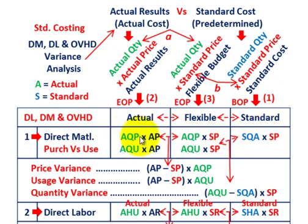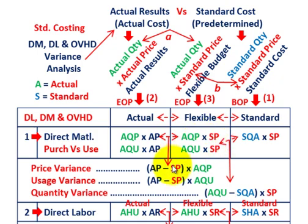For the price variance, the common factor between your actual and flexible amount is the actual quantity purchased. We factor that out, and the price variance is the difference between your actual price versus the standard price, multiplied by the actual quantity purchased. You can see how the table works with the color-coding to factor out your different variables.